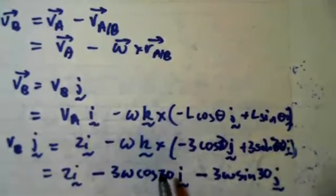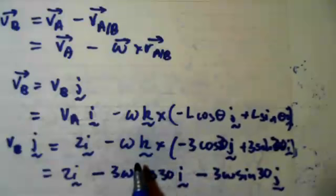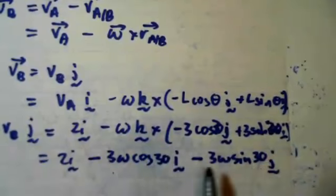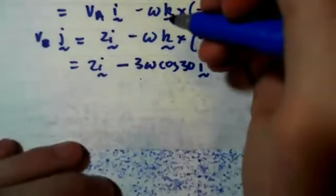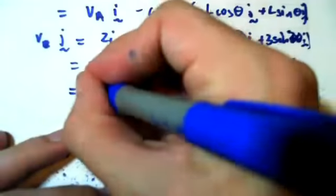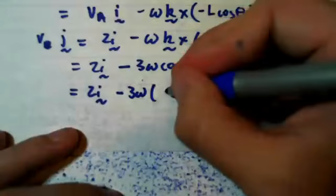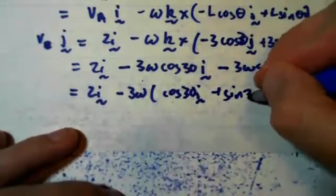We can see that because K cross J is negative I, and these two are both negative, so you end up getting a positive. K cross I is J, and you've got a negative out front of the omega, so it's a negative term as well. So this here is equal to 2I minus 3 omega outside of cos 30 I plus sine 30 J.